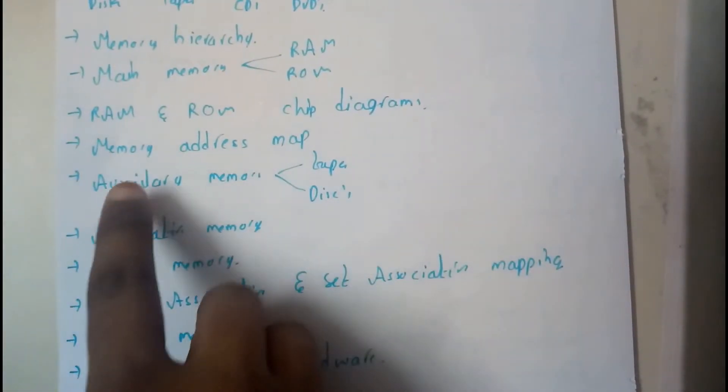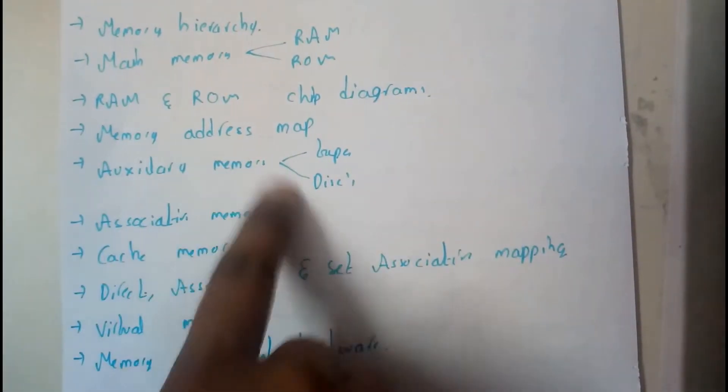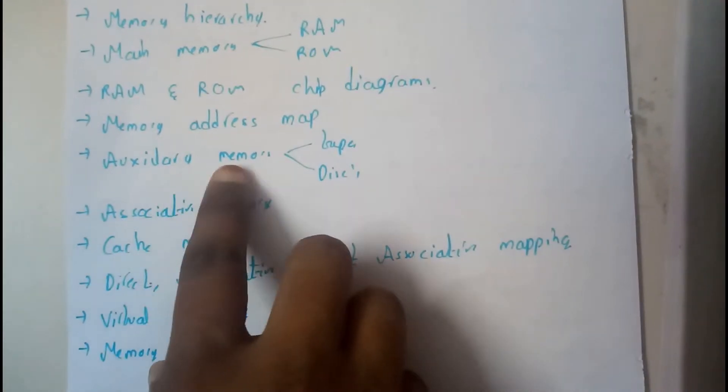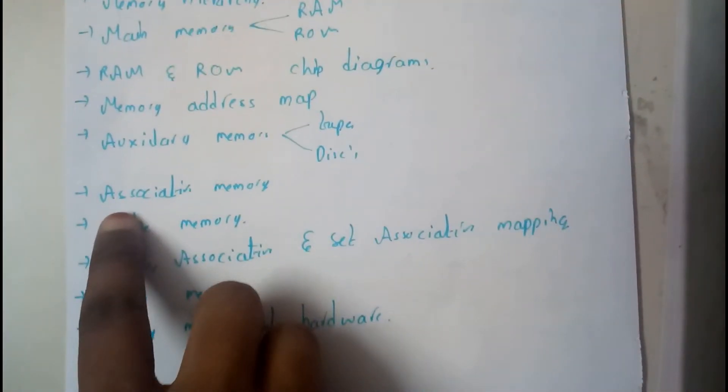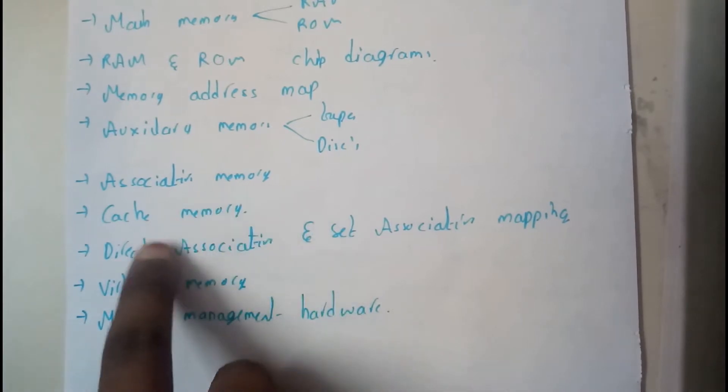We learned how the address is mapped between them. We also learned about auxiliary memory, which is tapes and discs, as well as associative memory and cache memory.